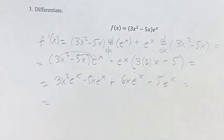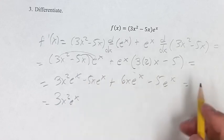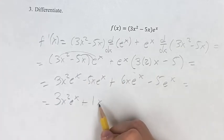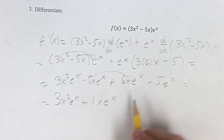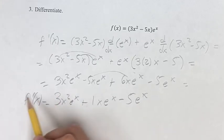And this is equivalent to 3x²e^x plus, 6 minus 5 is plus 1, xe^x, combining two like terms, minus 5e^x. This is your final solution for the derivative.